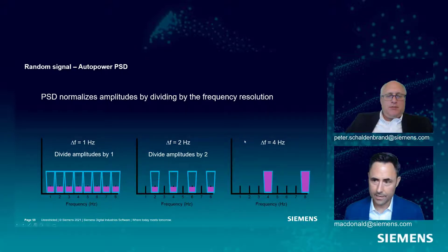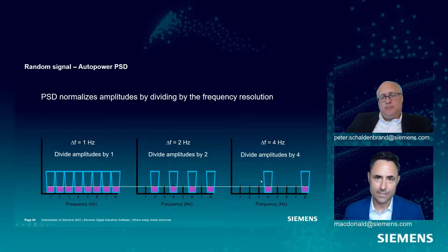So these will get cut in half because they're two hertz apart. Here, the delta F is four. So we divide each of these amplitudes by four. And boom, we end up with identical amplitudes, regardless of a change in frequency resolution with the PSD.